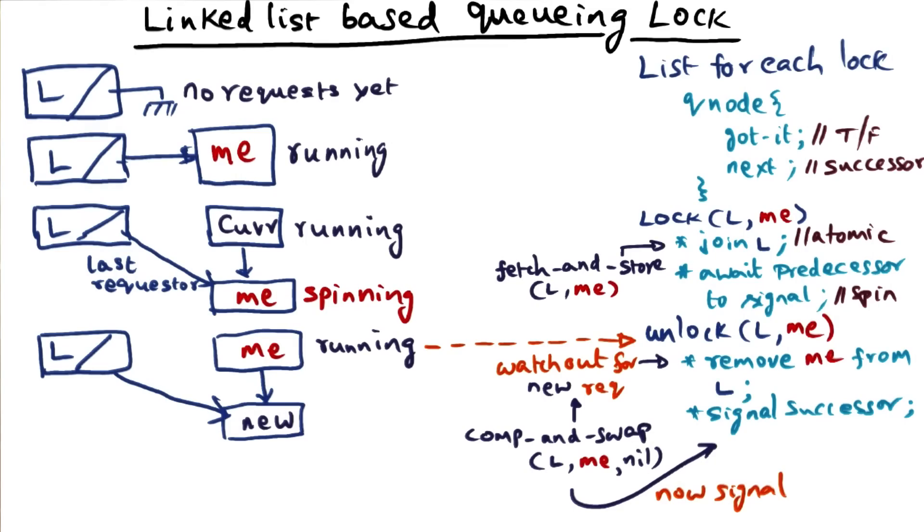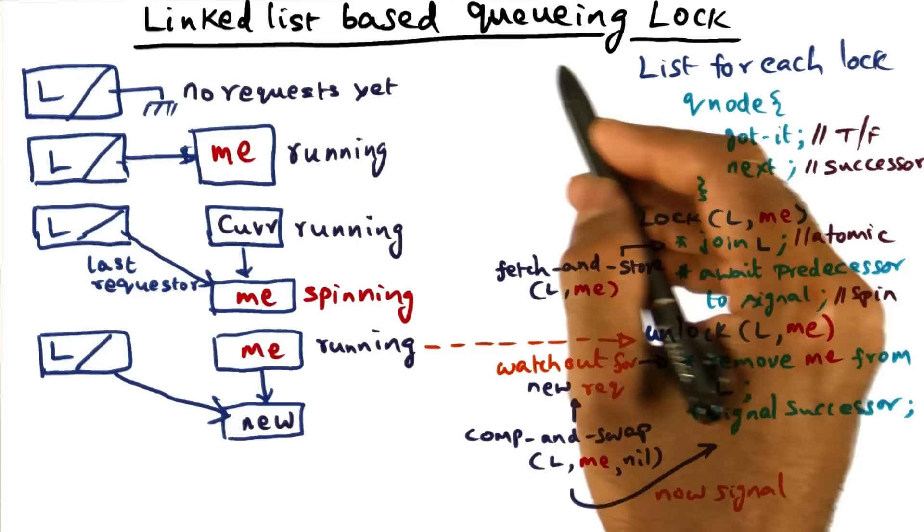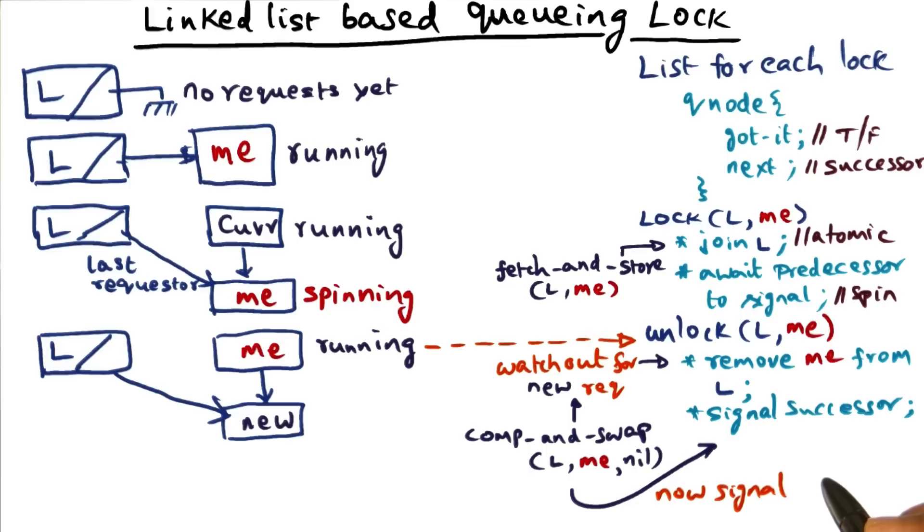I strongly advise you to look through the paper and understand both the linked list version as well as Anderson's array-based lock version of the queuing locks. There are lots of subtleties in implementing these kinds of algorithms in the parallel operating system kernel, and therefore it is important that you understand the subtleties by looking at the code.